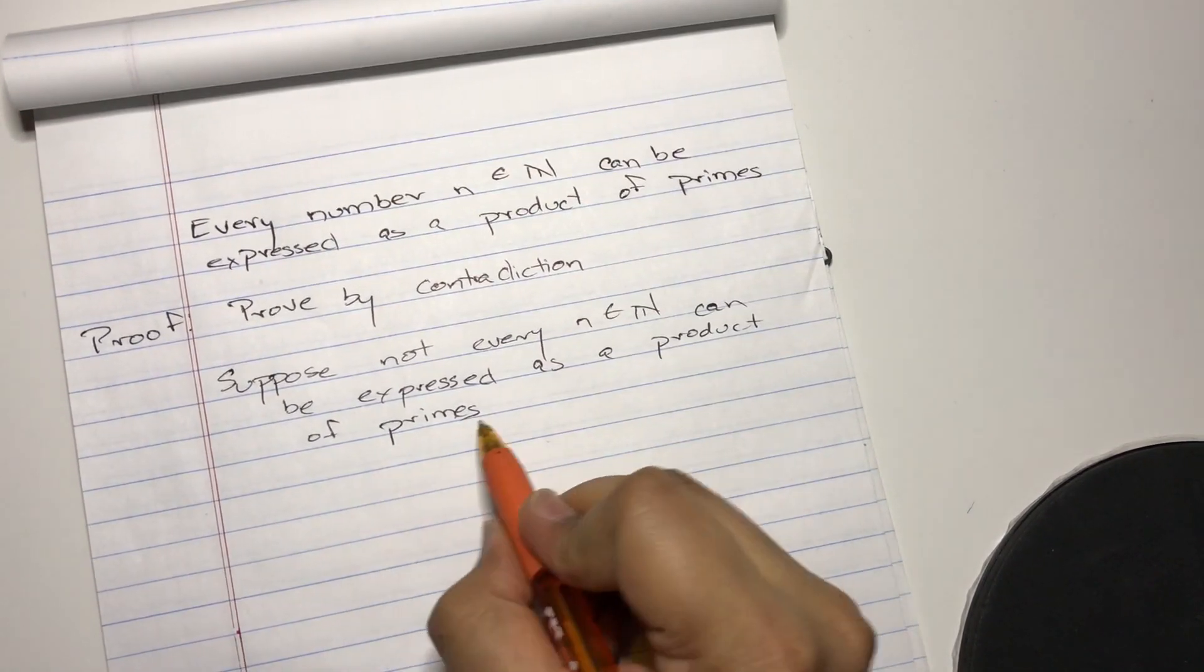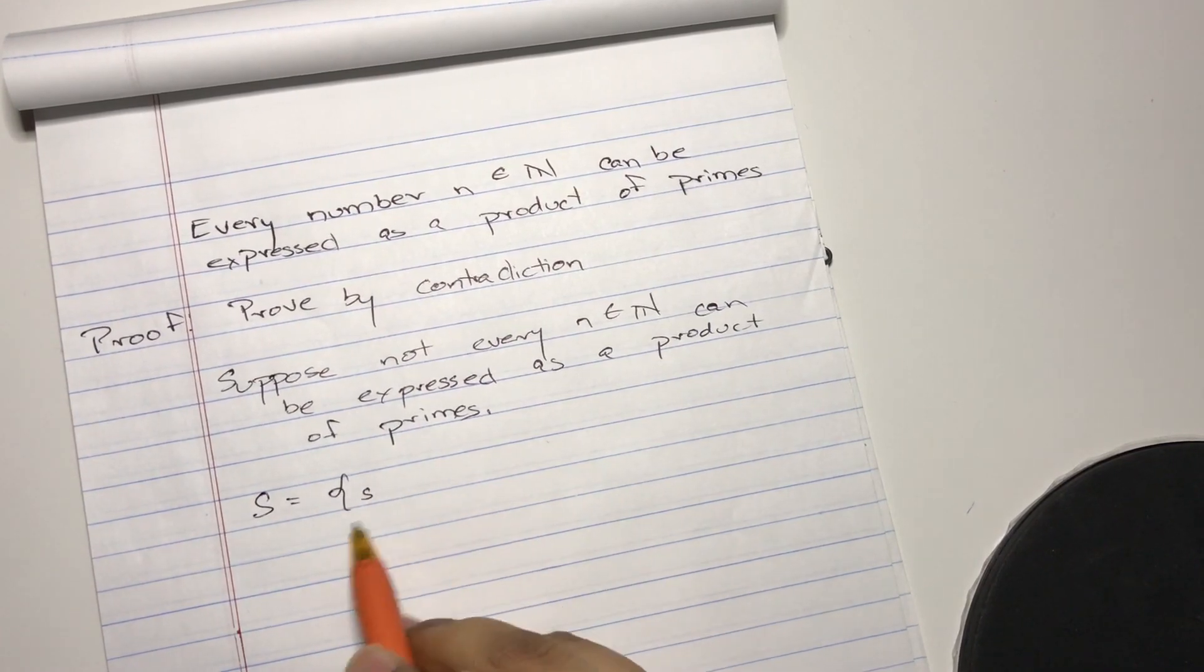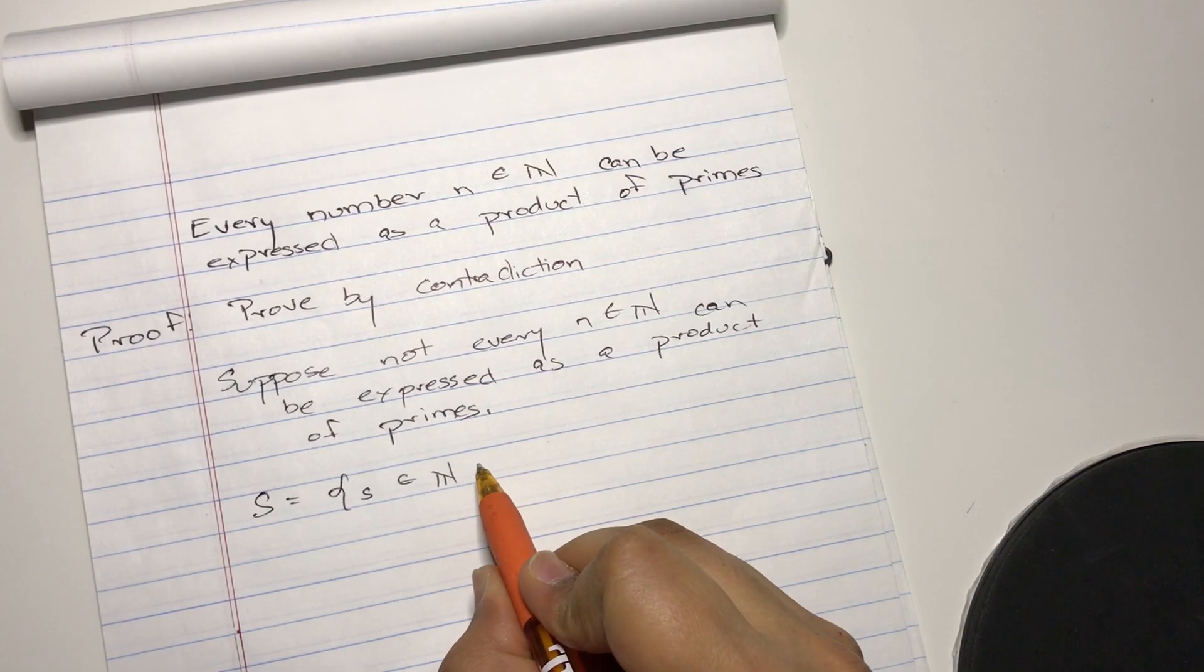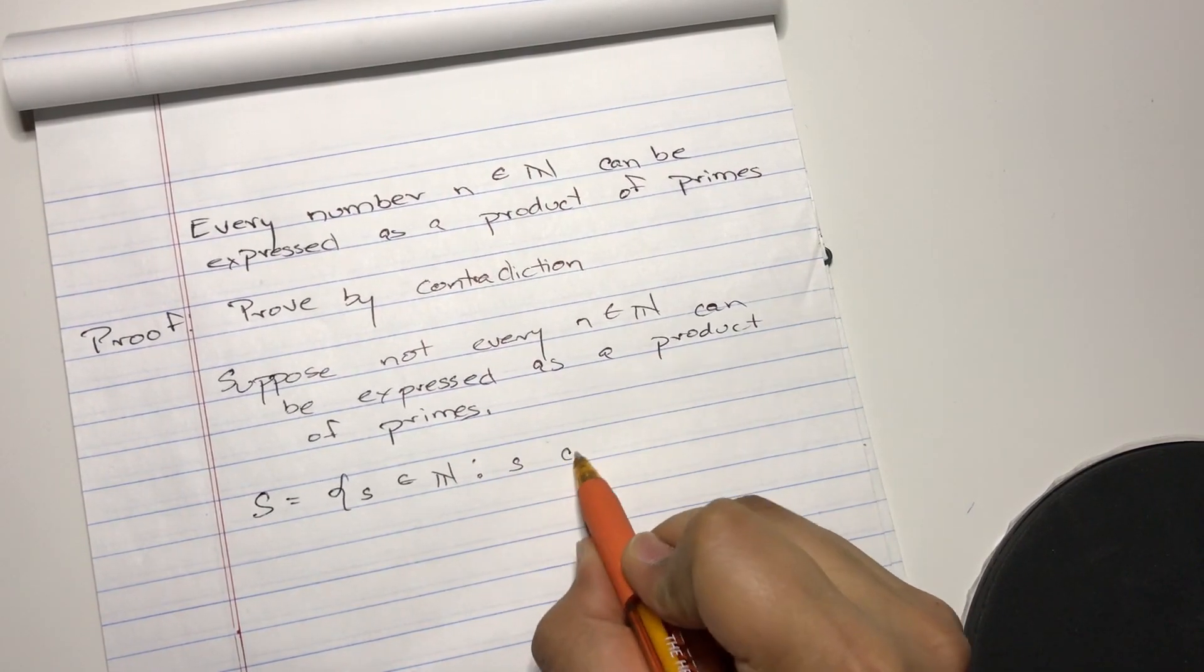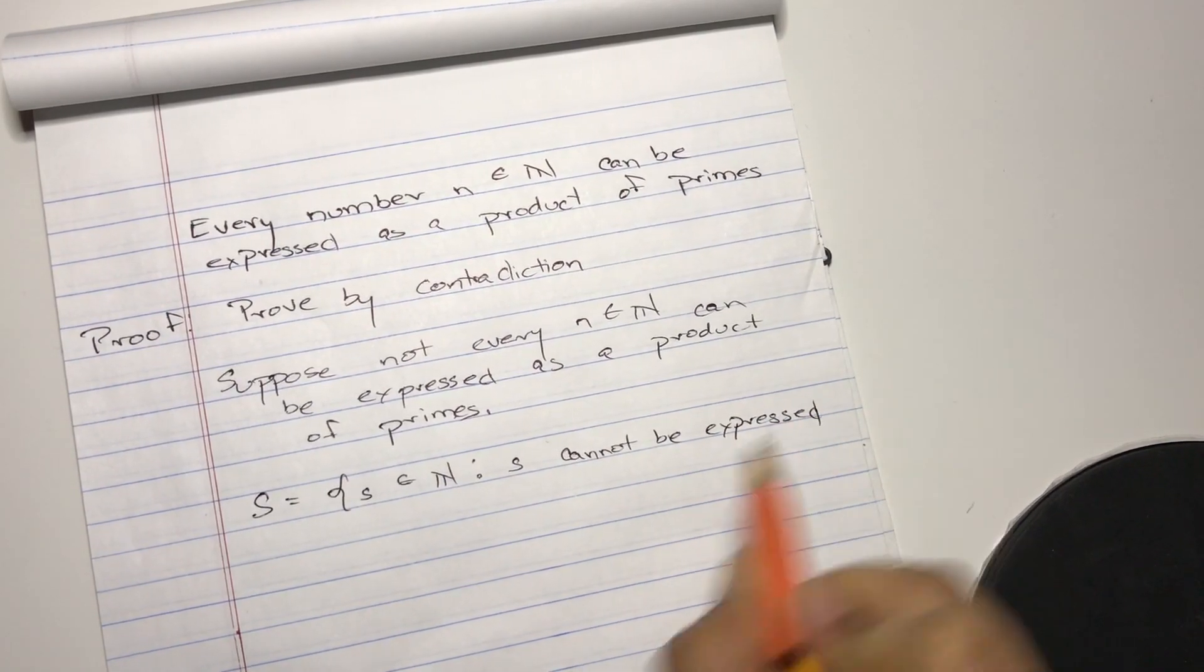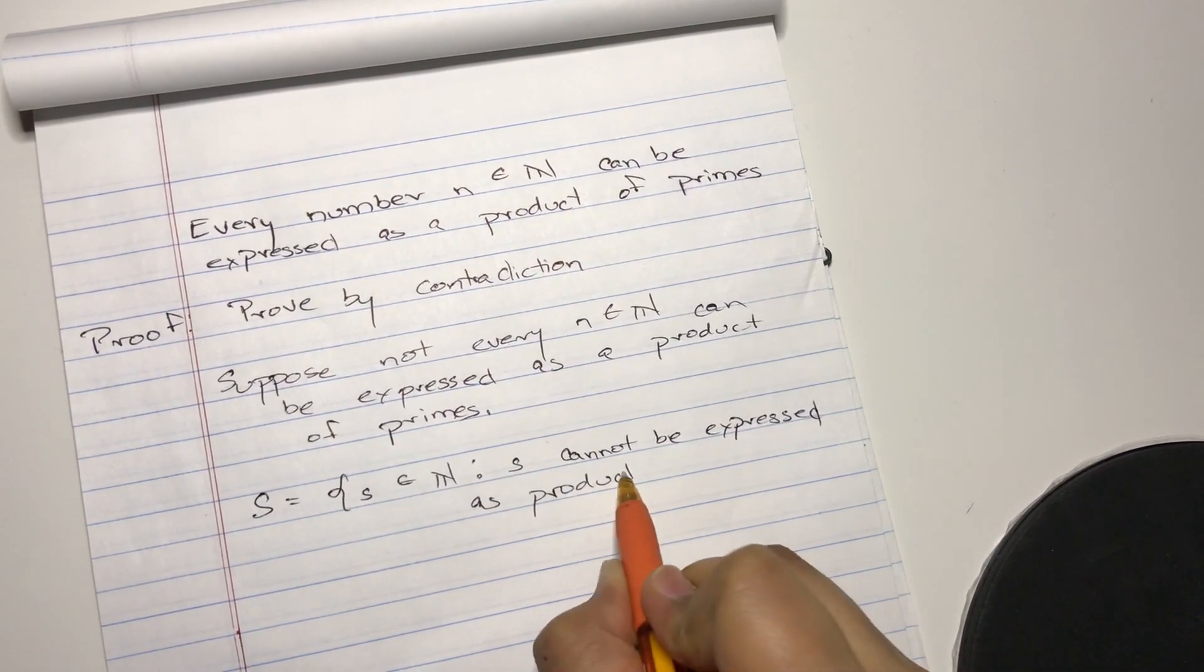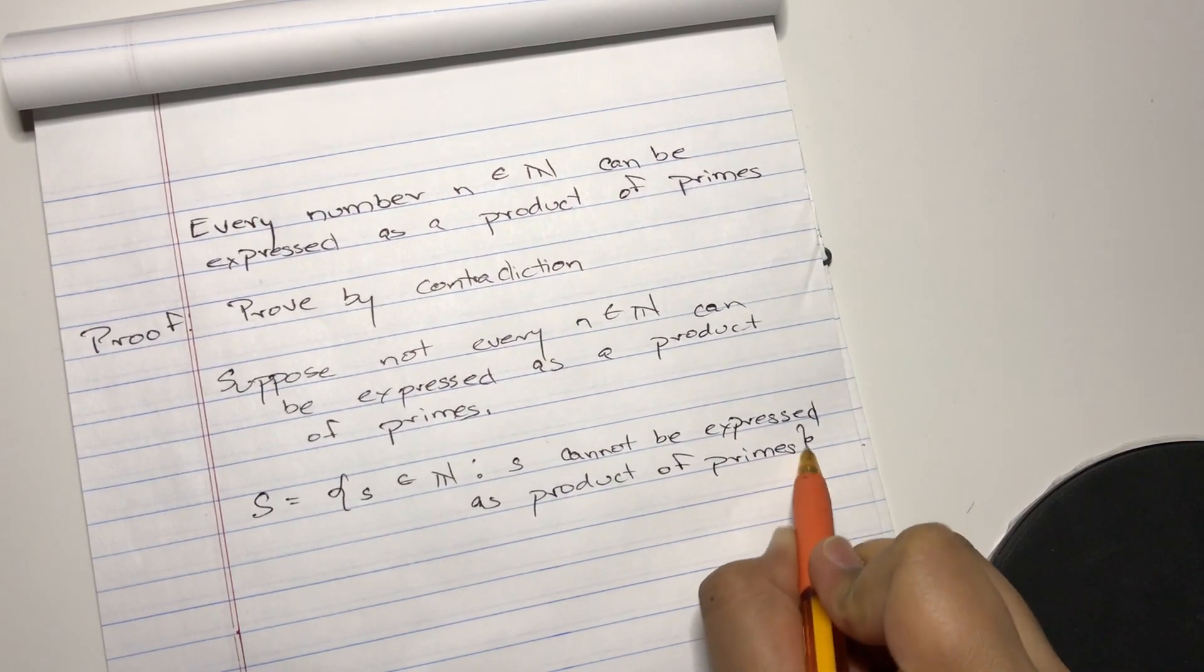Okay, so let there be a set S which contains the elements s belonging to the set of natural numbers such that the elements S cannot be expressed as products of primes. Product of primes. Okay, so we just made a set.